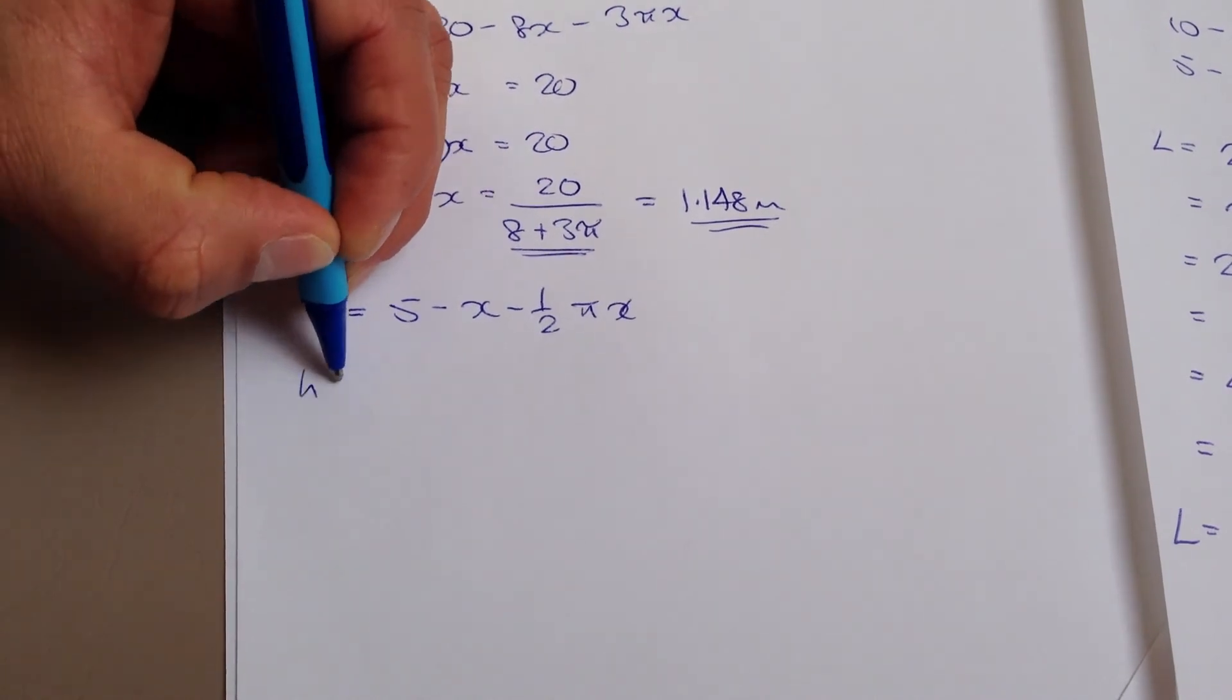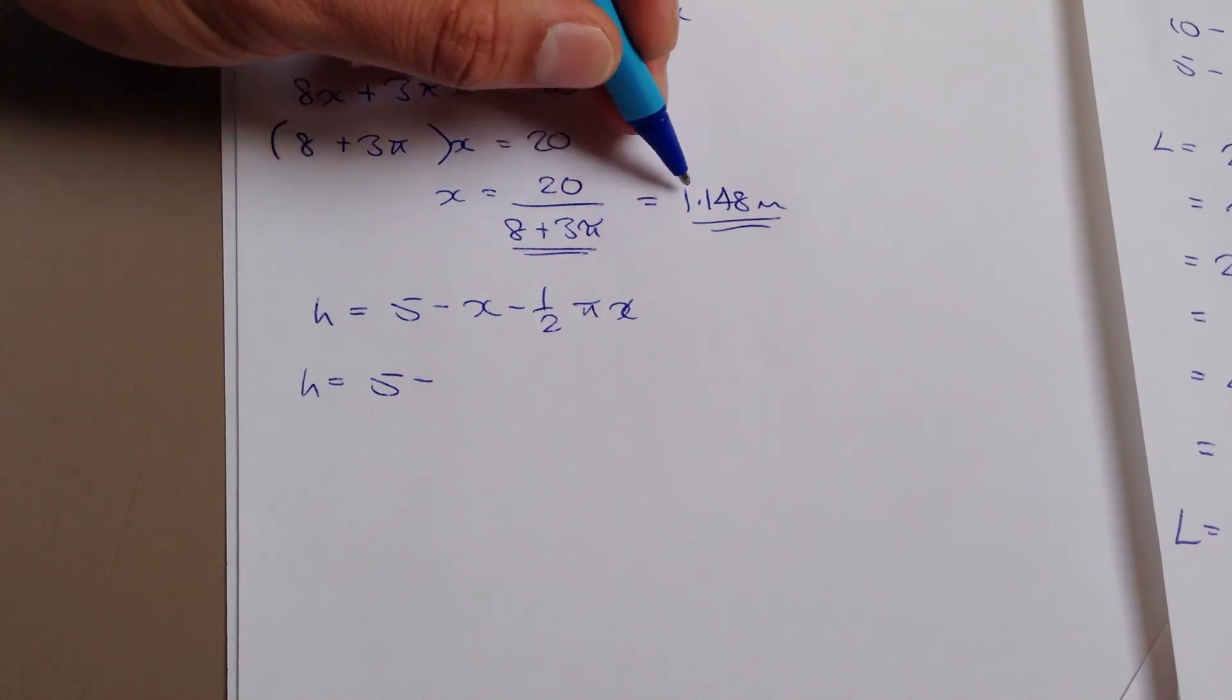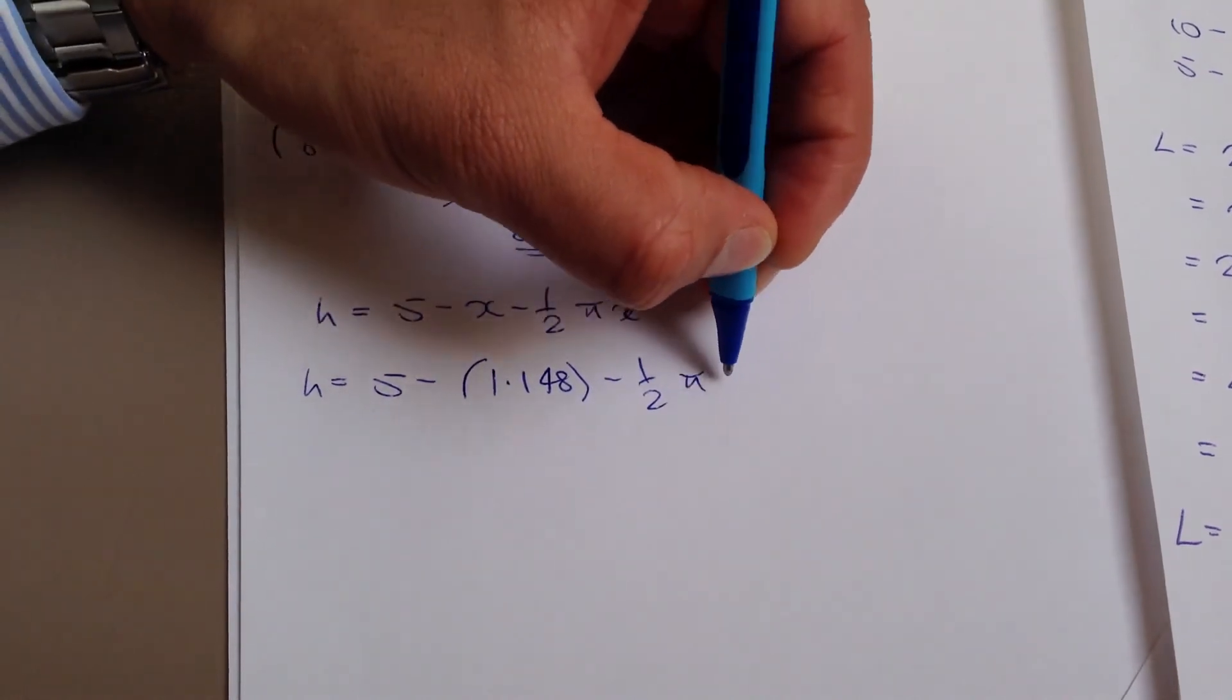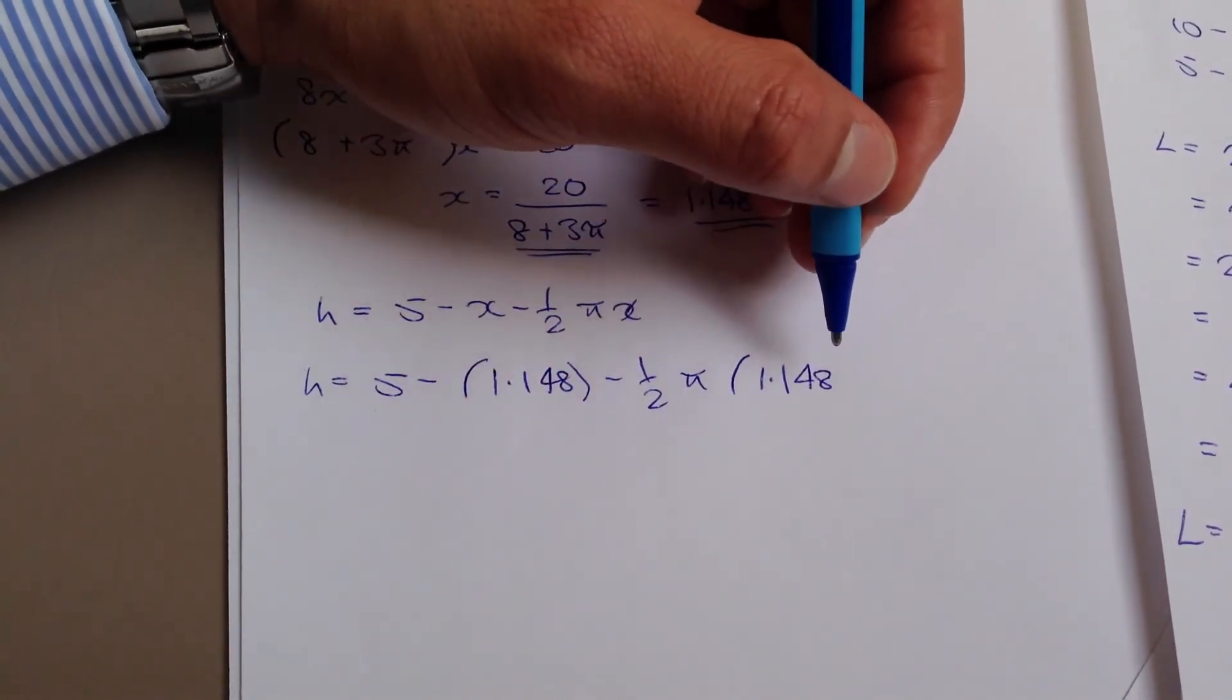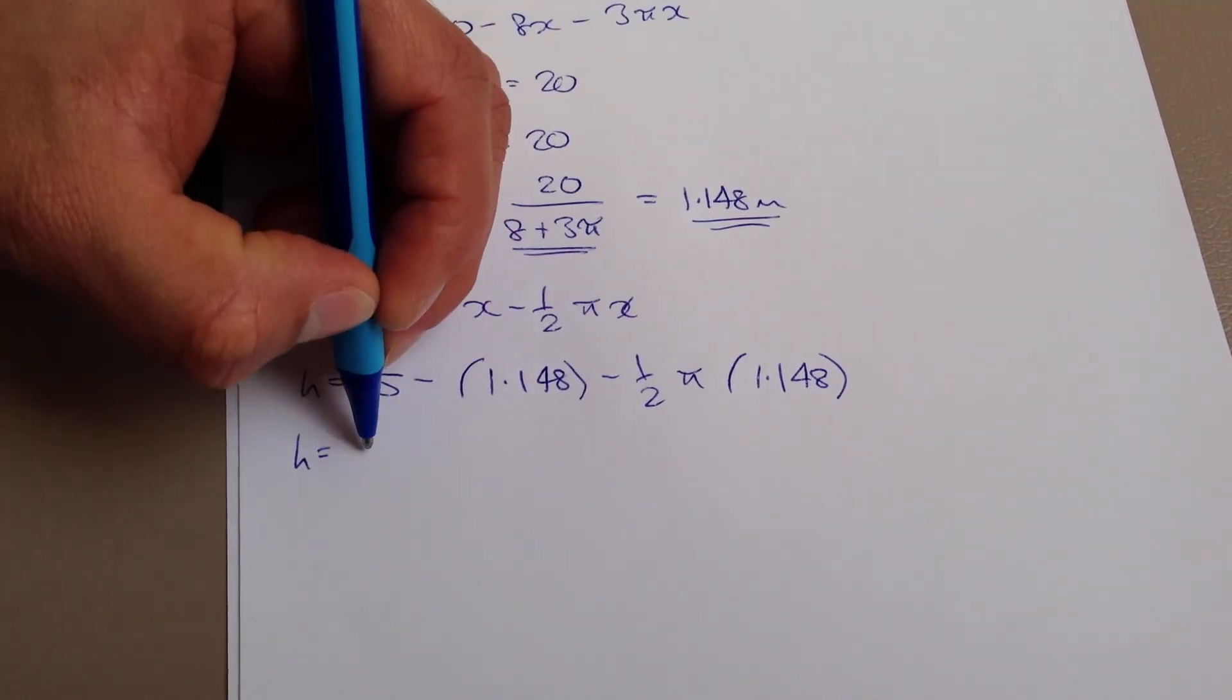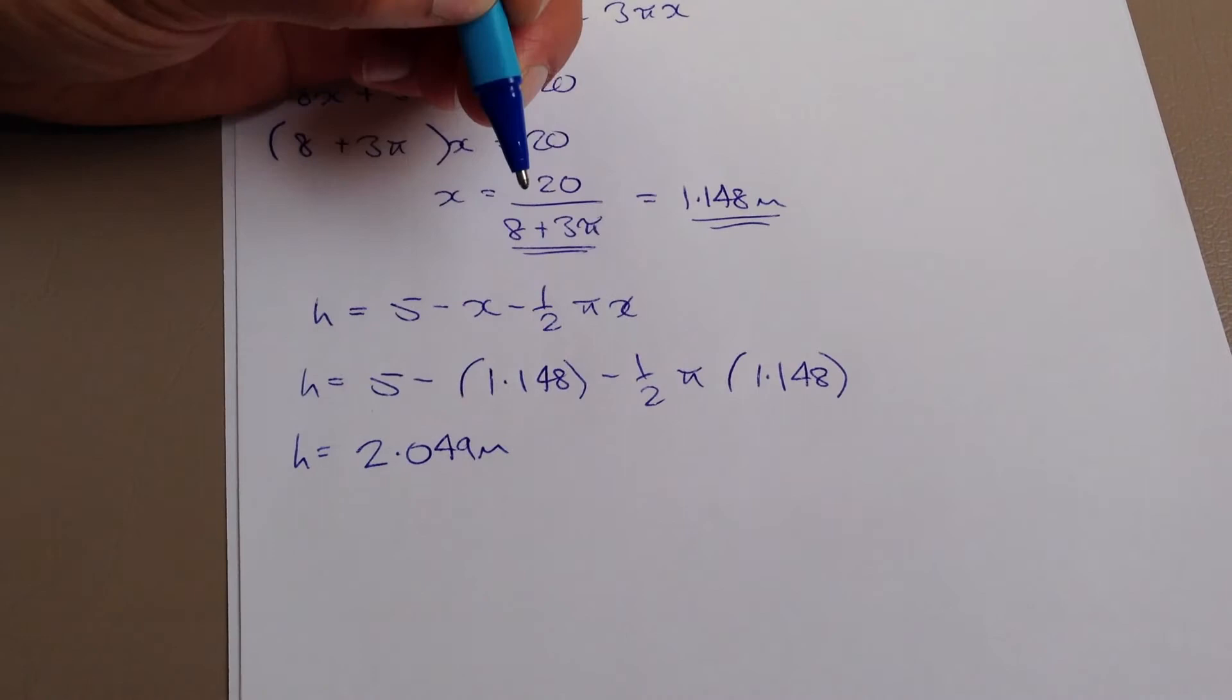So, if we do that, that's 5 take away and x is... Now, you can use either this or this value. I'll just use 1.148 minus 1 half pi, 1.148. And if we plug that into the calculator, h works out to be approximately 2.049 meters.